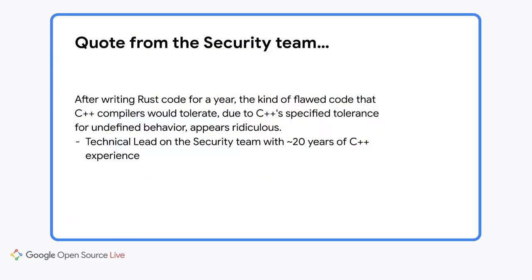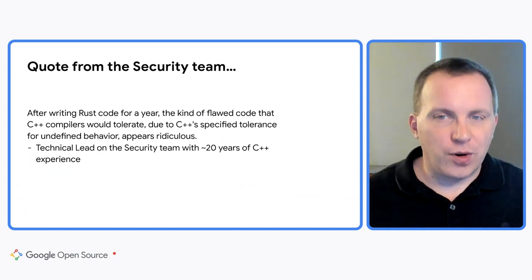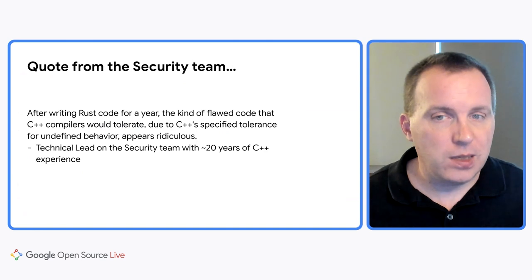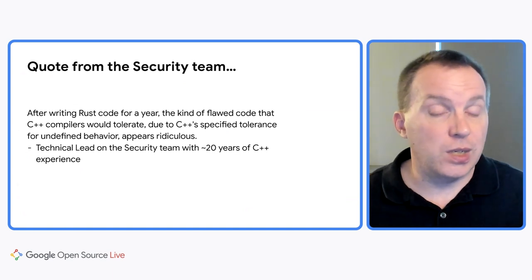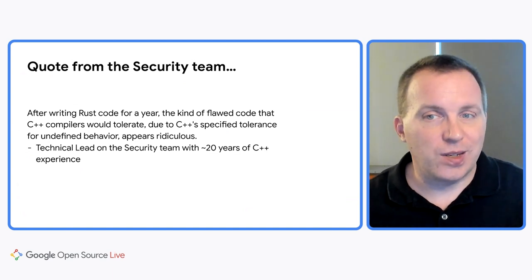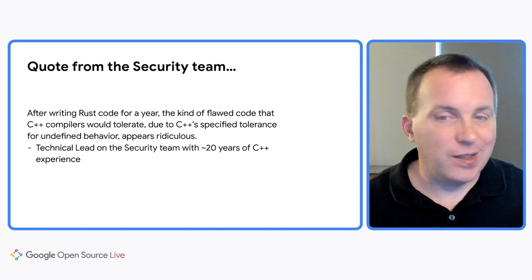Another early adopter of Rust in Android was the security team. To quote one of their technical leads: 'After writing Rust code for a year, the kind of flawed code that C++ compilers would tolerate, due to C++'s specified tolerance for undefined behavior, appears ridiculous.' We see this over and over. Not only does Rust make it possible for people without a systems programming background to write great code, but even people with decades of experience writing and shipping production C and C++ see the benefits. Writing performant and safe code in existing languages is just too hard.